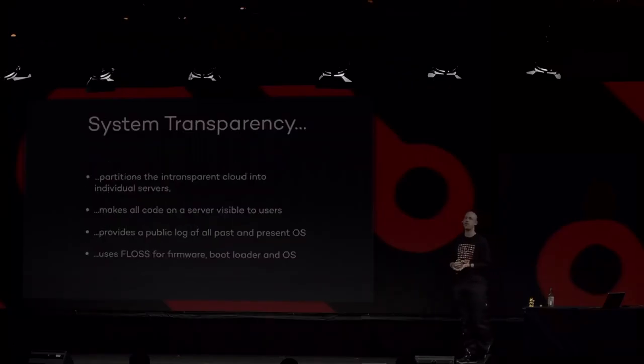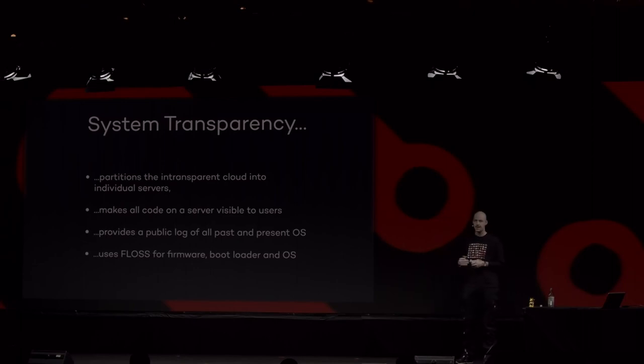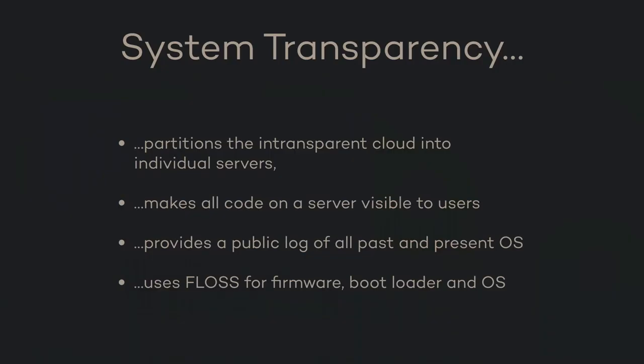System transparency provides a public log of everything that has been done also in the past by the operating system provider. This means we can audit any provider more thoroughly than before, because we can check what happened before we used this machine. This also means that every platform owner — every provider — has to commit publicly and irrevocably to every version of the image before it is deployed on the machine. As a concerned user, we can monitor the certificate transparency log, watch for new operating system images, and then verify them.